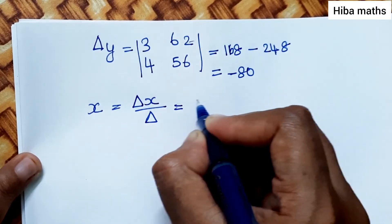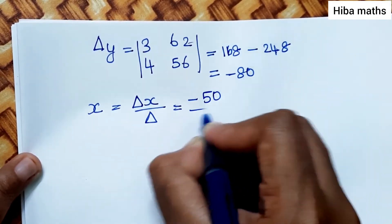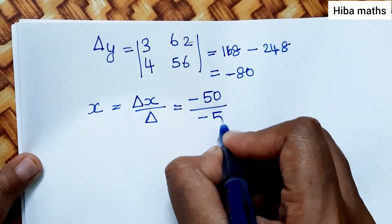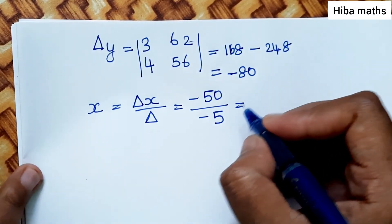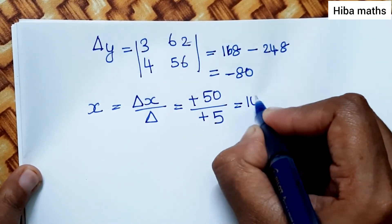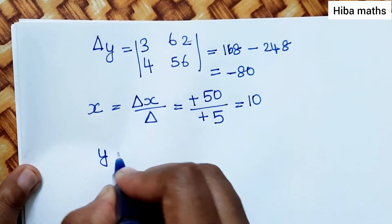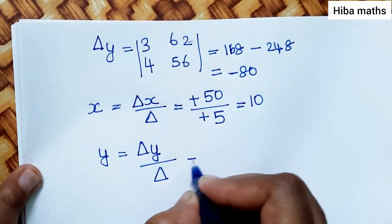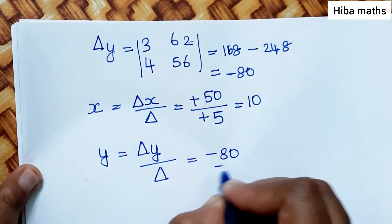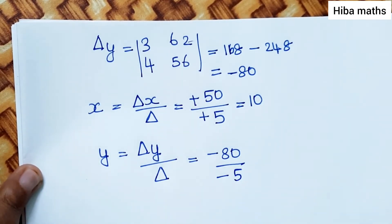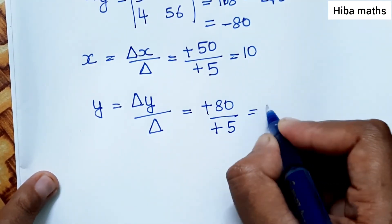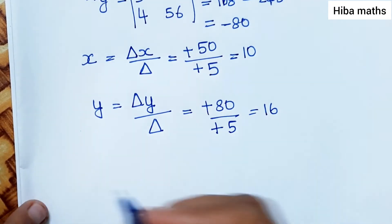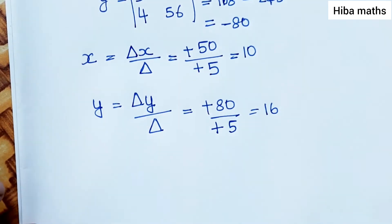x equals delta x by delta, which is minus 50 by minus 5, giving us 10. And y equals delta y by delta, which is minus 80 by minus 5, equals 16.